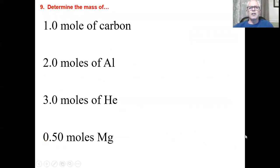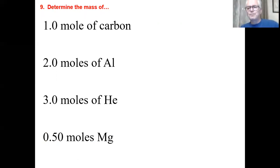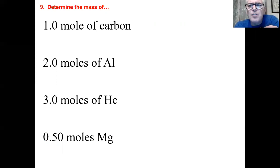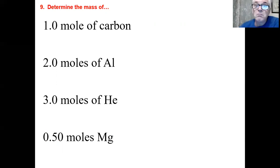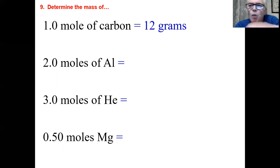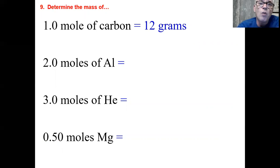That works for everything. If you had 6.02 × 10²³ carbon atoms, put your finger in box 6 — one atom has a mass of 12 AMUs — so one mole gives you 12 grams. One atom is the atomic mass; one mole gives you the molar mass — the mass of a mole.